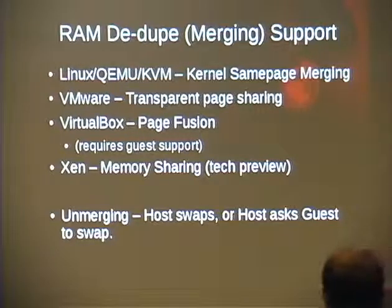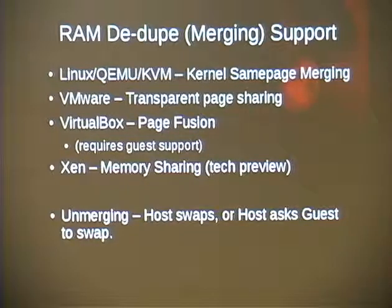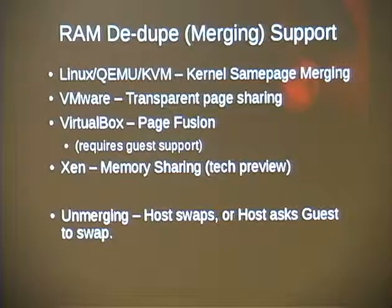If you have a bunch of identical VMs that start diverging, it doesn't crash. The host either swaps those VMs' memory out to disk locally, or through a driver communicates to the guest and says: I need you to take RAM you're not really using and throw it on your virtual disk — so it swaps on either the host side or the guest side.